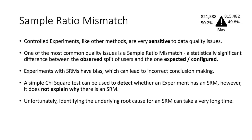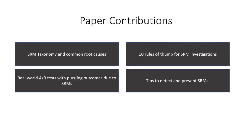Based on our experience, there are many different reasons, and figuring out which one it is can take a very long time. In this paper, we provide practitioners with two main contributions. First, we provide a taxonomy of SRMs and their root causes. Second, we provide 10 rules of thumb to support the SRM investigations. We also show real-world A/B tests that had a puzzling outcome due to an SRM and discuss tips to detect and prevent SRMs from happening.